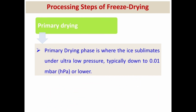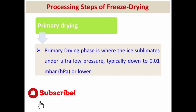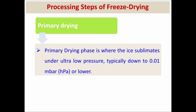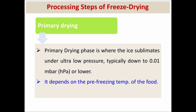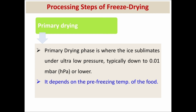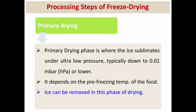The third step of freeze drying is primary drying. In the primary drying phase, the ice sublimates under ultra-low pressure, typically down to 0.01 millibar or lower. It depends on the pre-freezing temperature of the food. Ice can be removed in this phase of drying.